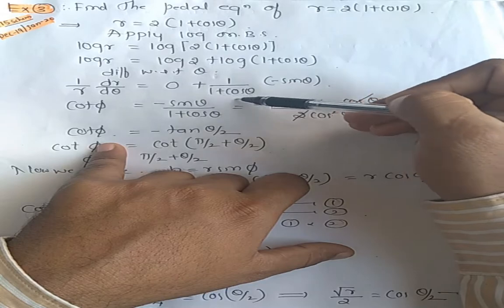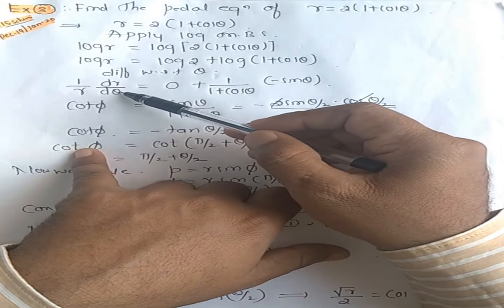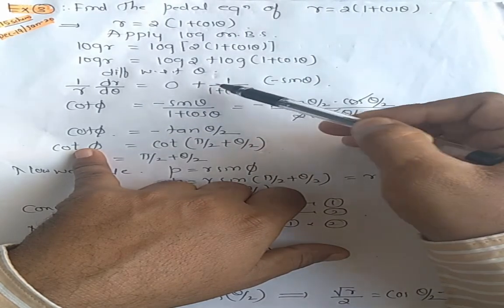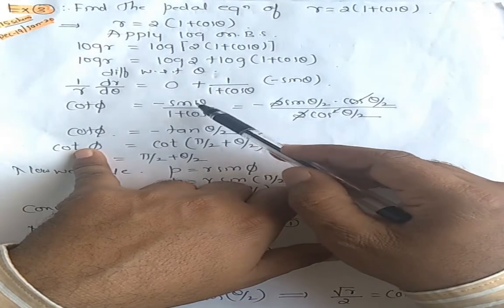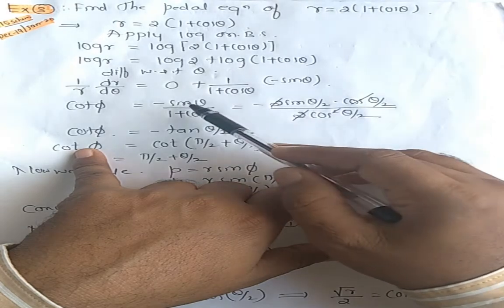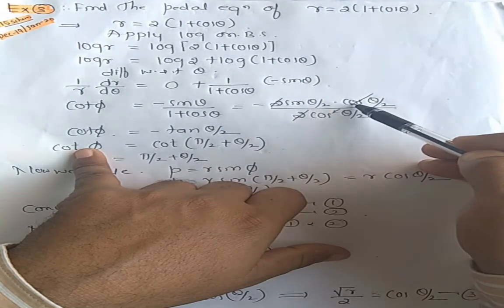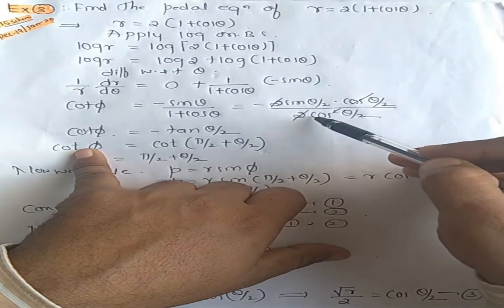Log 2 is a constant, differentiation becomes 0. Log x is 1 by x. Differentiation of this term is minus sine theta. So simplify: 1 by r, dr upon d theta is nothing but cot phi equals minus sine theta divided by 1 plus cos theta. Cot phi as it is, convert in terms of cot. Minus sine, 2 times sine theta is 2 times sine theta by 2 into cos theta by 2.